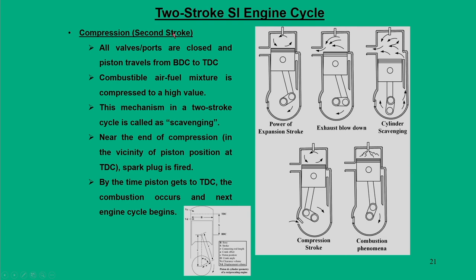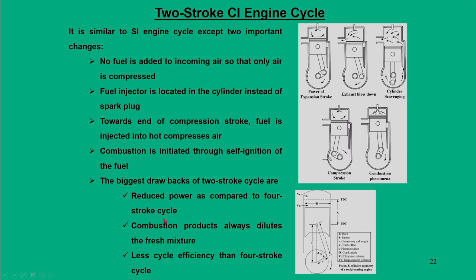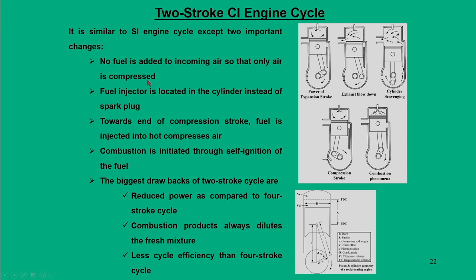In the compression stroke for the two-stroke engine cycle, all valves are closed and the piston travels from BDC to TDC. This mechanism in a two-stroke cycle is called combustion scavenging. Near the end of compression the spark plug is fired, and by the time the piston reaches TDC, combustion occurs and the next cycle begins. For the two-stroke CI engine cycle, no fuel is added to incoming air — only air is compressed during the compression stroke.